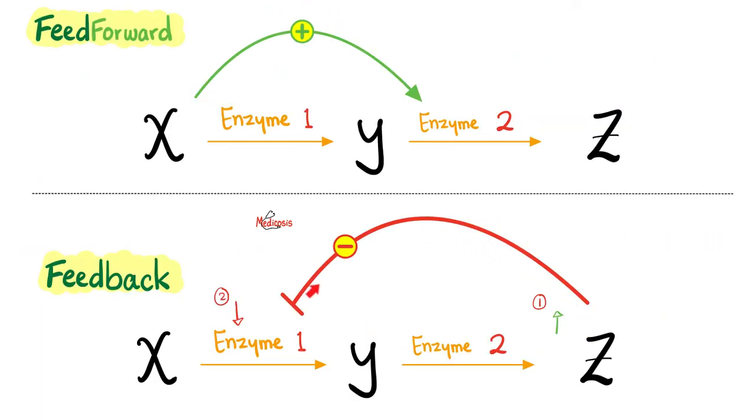So let's recap. Look at this. Do you think this is positive feedback or negative feedback? Well, an increase in Z led to decrease in the enzyme before it. We have opposite arrows. Therefore, it's a negative feedback.